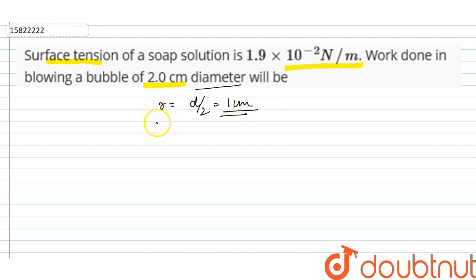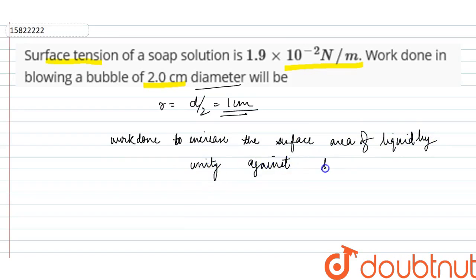So now, what is the work done? So in terms of work done, how do we define the surface tension? Work done to increase the surface area of liquid by unity against the surface tension.